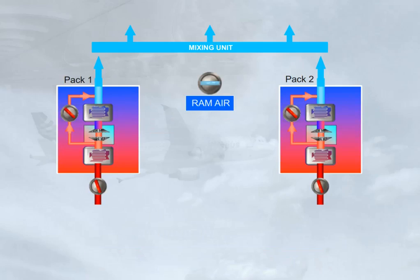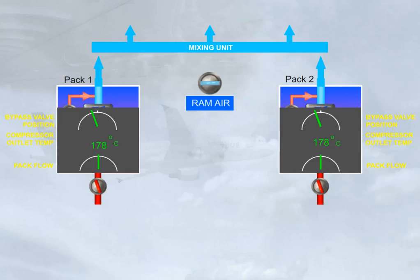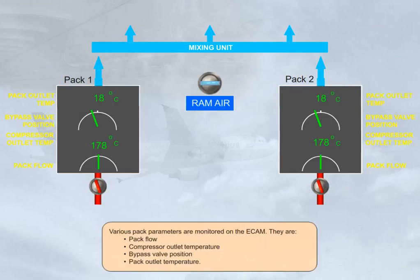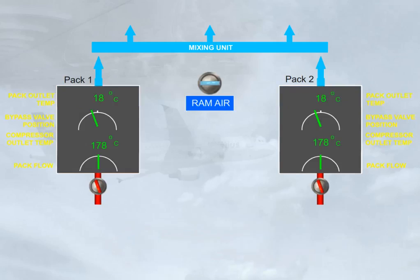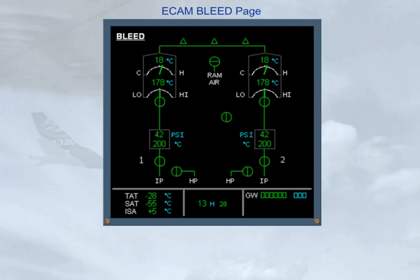Various pack parameters are monitored on the ECAM. They are: pack flow, compressor outlet temperature, bypass valve position, and pack outlet temperature. These parameters, along with the valve positions, are displayed on the upper part of the ECAM bleed page.